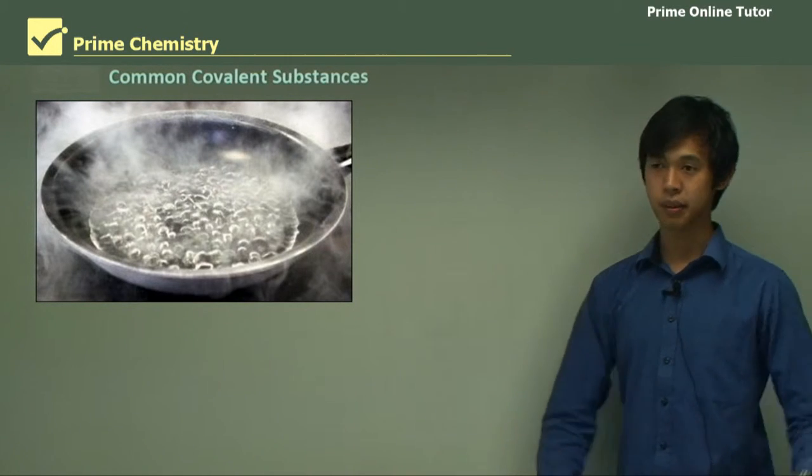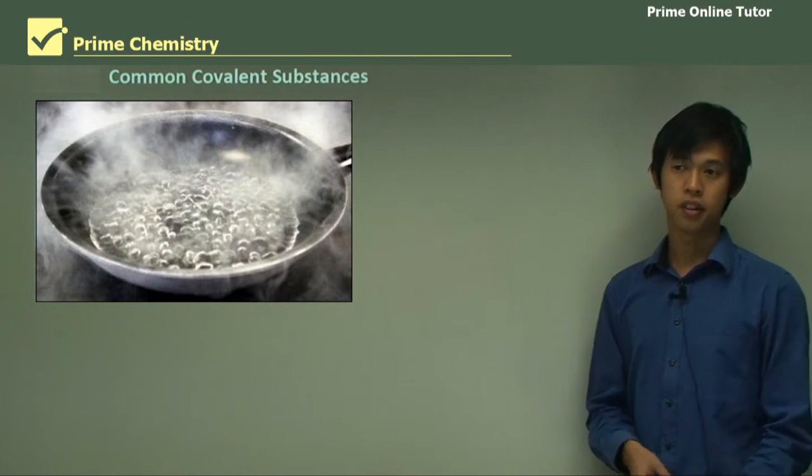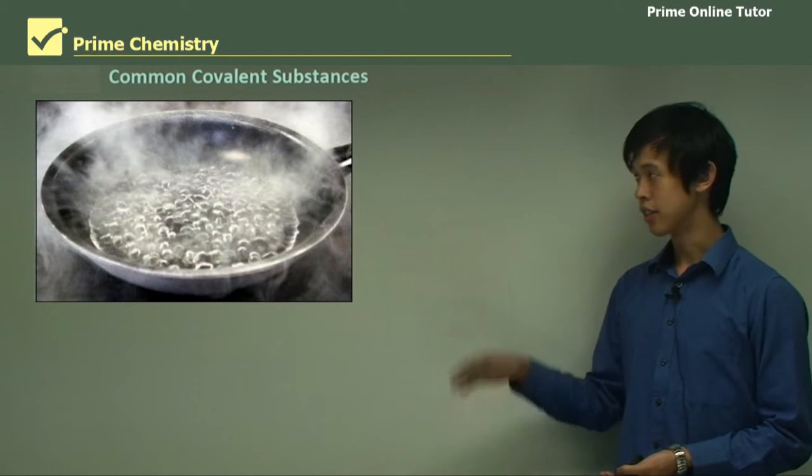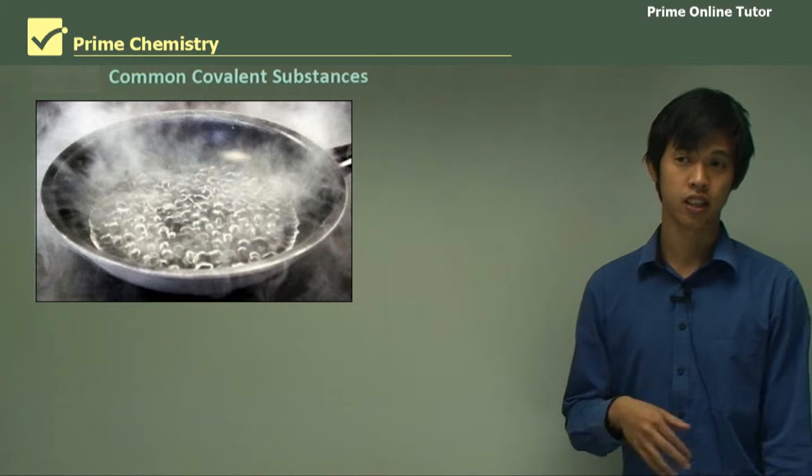So we looked at, in the previous lesson, all these different types of bonding. And we've seen different examples of those metallic, ionic substances. So now we're going to look at common examples of covalent substances in our environment.